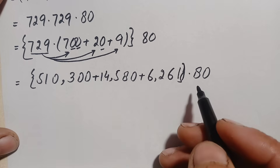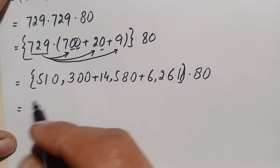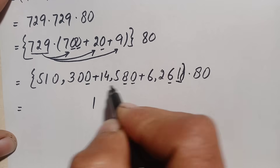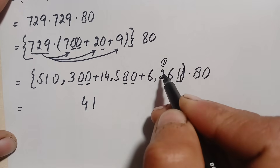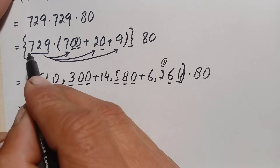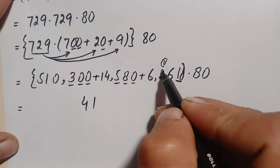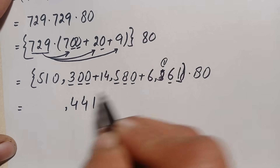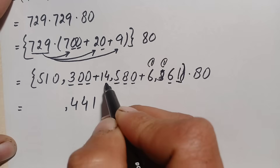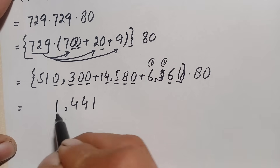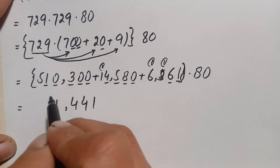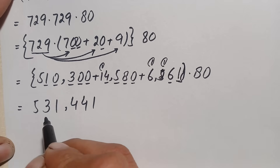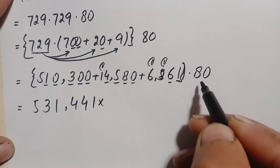Now we add the three partial products. Starting from the ones position: 1 plus 0 plus 0 is 1; 6 plus 8 plus 0 is 14, write 4 carry 1; 5 plus 1 plus 5 plus 3 is 14, write 4 carry 1; 6 plus 1 plus 4 plus 0 is 11, write 1 carry 1; 1 plus 1 plus 1 is 3; and 5 remains. So the sum of the three partial products is 531,441.